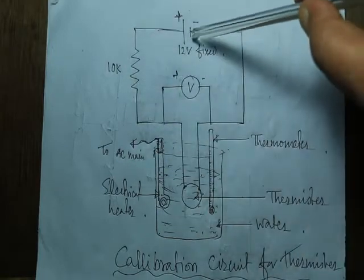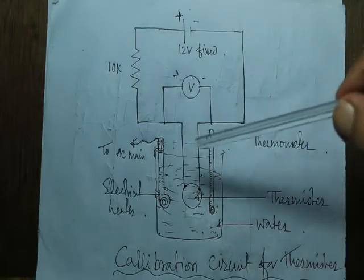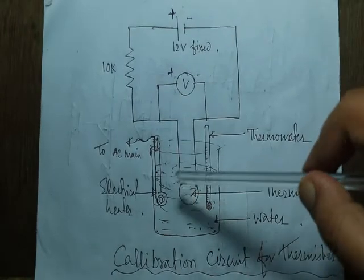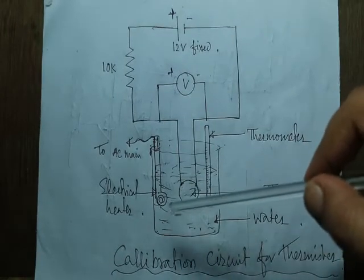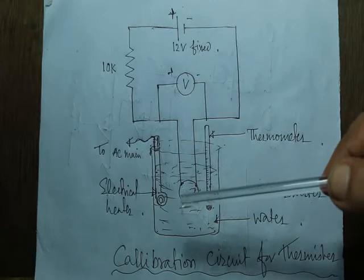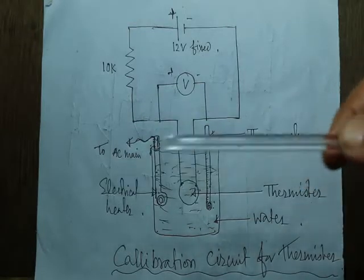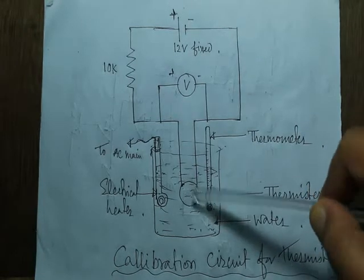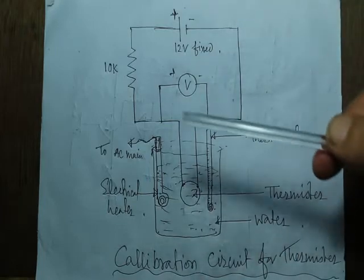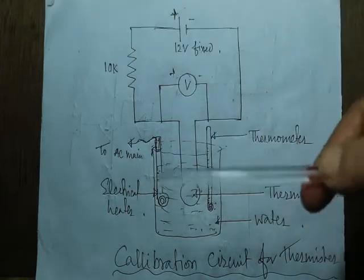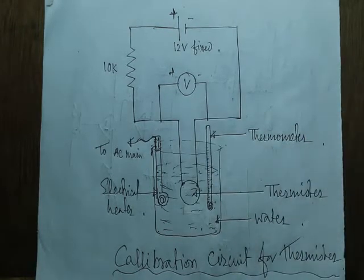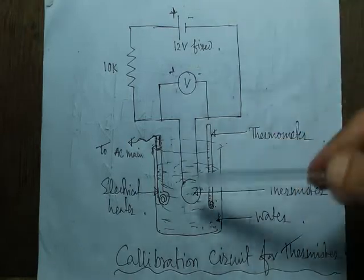A thermistor is basically a ceramic polymer which has a temperature dependency of resistance. If resistance increases with an increase in temperature, it is called a positive temperature coefficient (PTC) thermistor. If resistance decreases with an increase in temperature, we call it a negative temperature coefficient (NTC) thermistor.